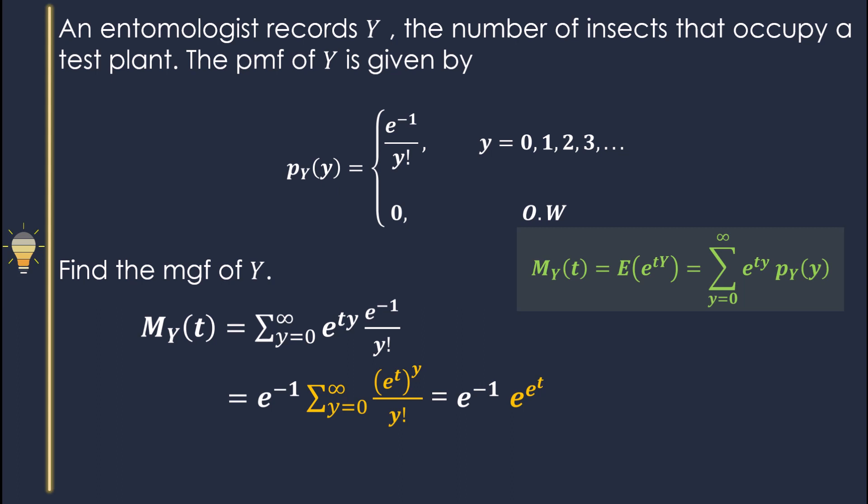If you consider the Maclaurin series of e to the power x, you will understand that is e to the power e^t. Then we can simplify: that is e to power e^t minus one. So that is the moment generating function of Y.